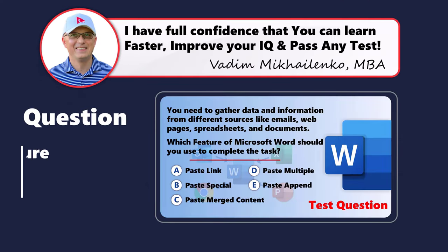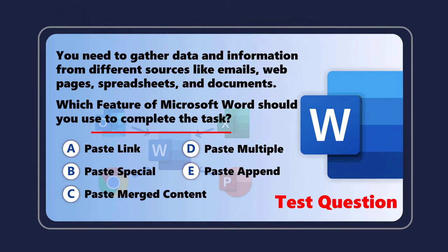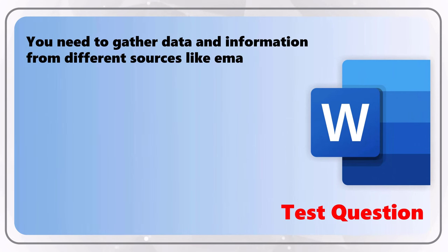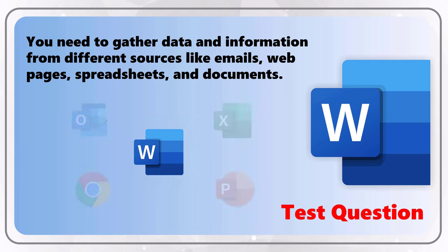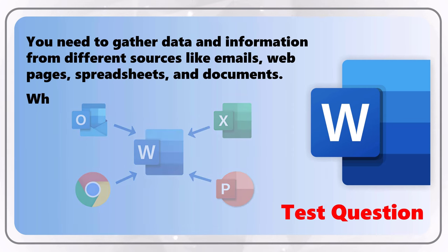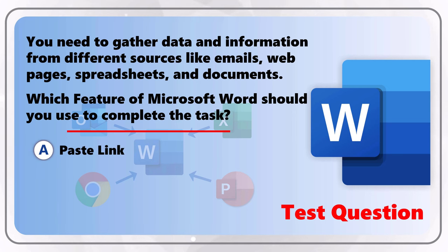Here's a thought-provoking assessment test question. In addition to boosting your reasoning skills, it teaches you a skill you can use regularly. You need to gather data and information from multiple different sources like emails, web pages, spreadsheets, and documents. Which feature of Microsoft Word should you use to complete this task? You're presented with five possible choices: Choice A, Paste Link; Choice B, Paste Special.